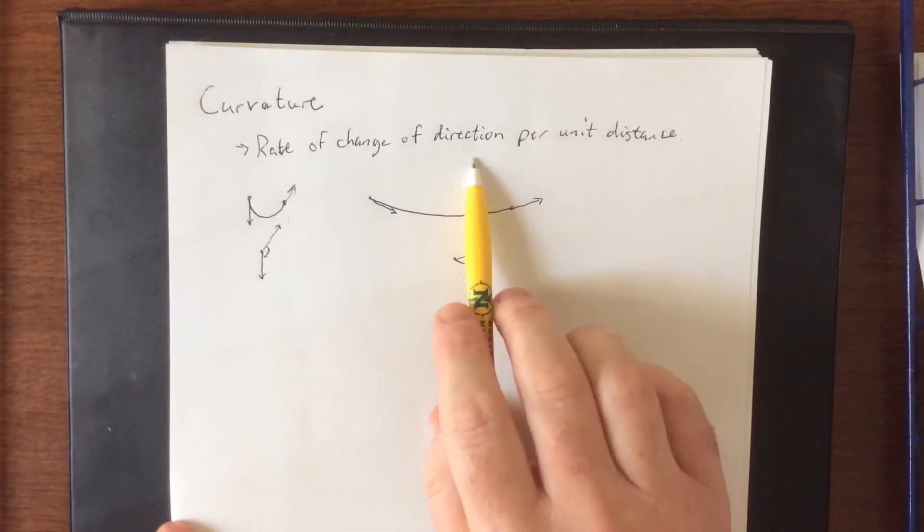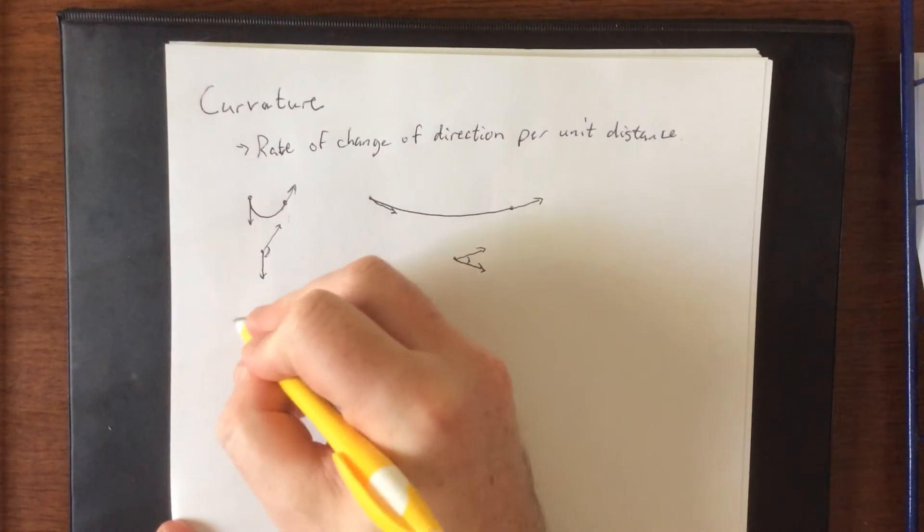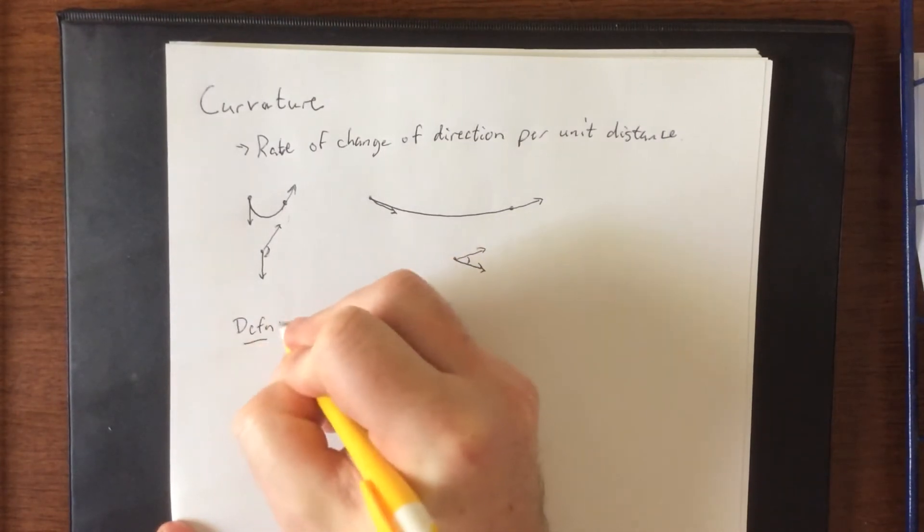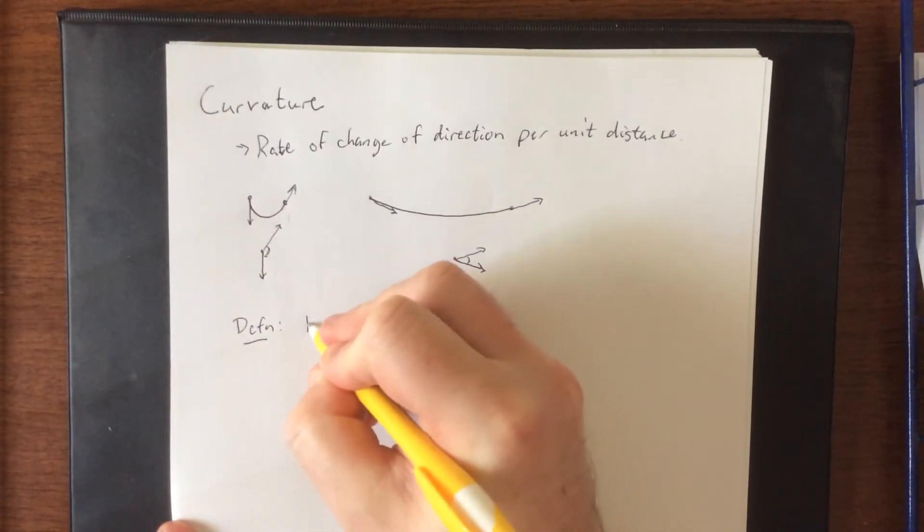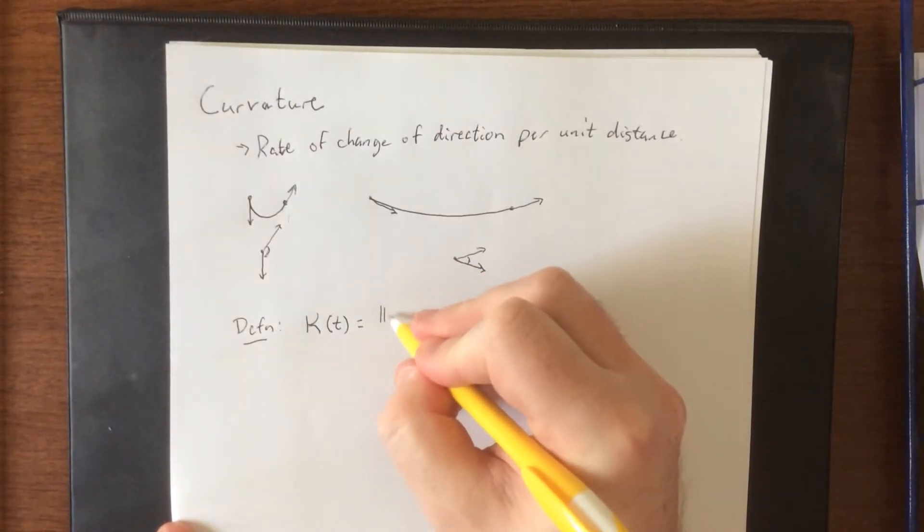As far as direction is concerned, we can do that with a tangent vector, but since I only care about the direction and not the magnitude, we're going to go with a unit tangent vector. So the mathematical definition of curvature is kappa of t.